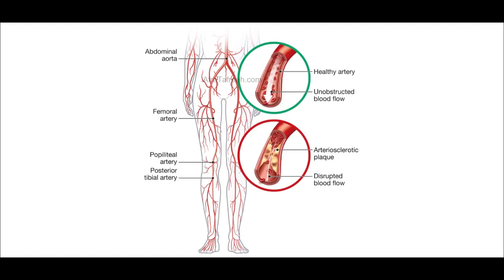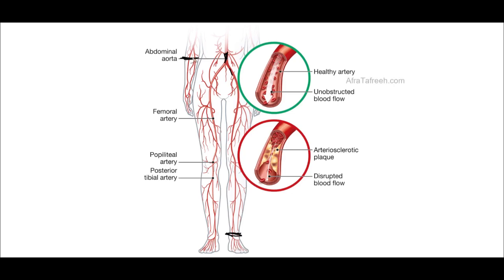This can be appreciated in our schematic, where a healthy artery with no atherosclerosis will have unobstructed blood flow, whereas a patient with a plaque or atherosclerosis will have disrupted blood flow. This is going to be reflected in our ABI, because if a patient has blockages in large vessels — for example, in the iliacs or in the lower aorta — there will be a difference in blood pressure between the patient's ankle and brachial artery. The systolic blood pressure at the ankle is going to be less than at the brachial artery, which is why patients with peripheral arterial disease have an ABI classically less than 0.9.